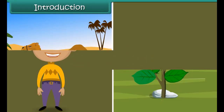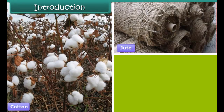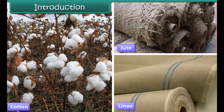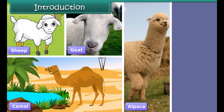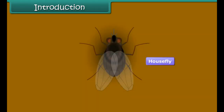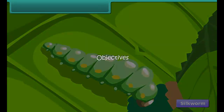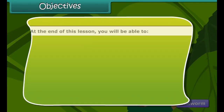Fibers can be obtained from both plants and animals. Some familiar plant sources of fiber are cotton, jute and linen. Some well-known animal sources of fiber are sheep, goat, camel, alpaca and llama. If we treat insects as different from animals, then the silkworm can be classified as an insect source of fiber.